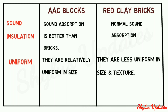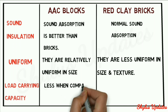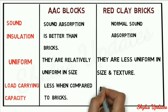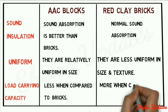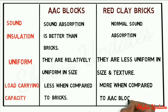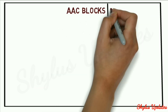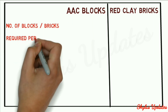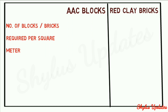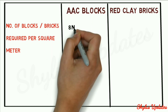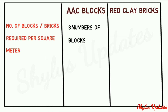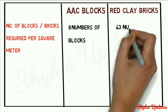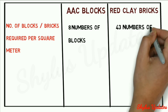Load carrying capacity of AAC blocks is less when compared to bricks. Load carrying capacity of red clay bricks is more when compared to AAC blocks. Number of AAC blocks required per square meter: 8 blocks. Number of bricks required per square meter: 43 bricks.